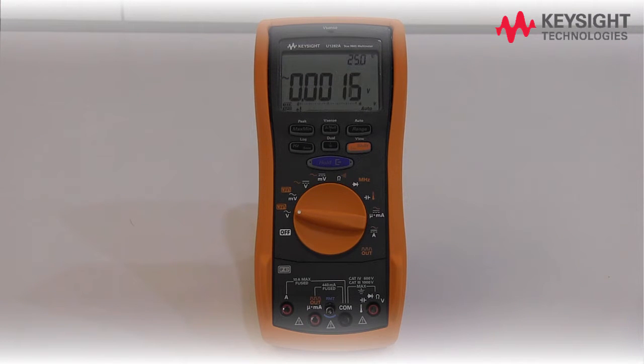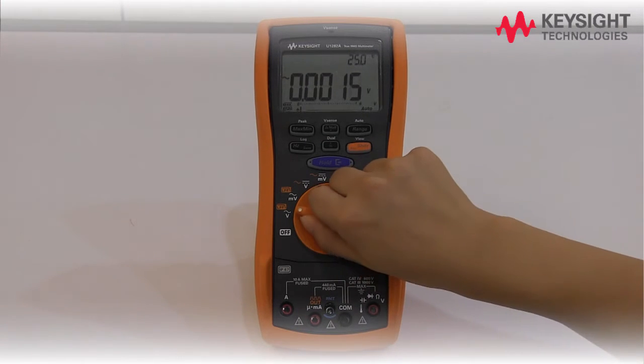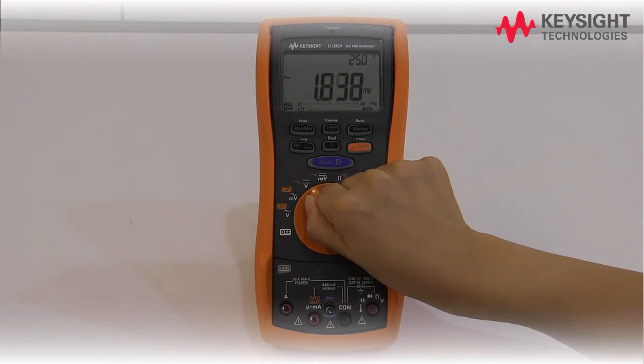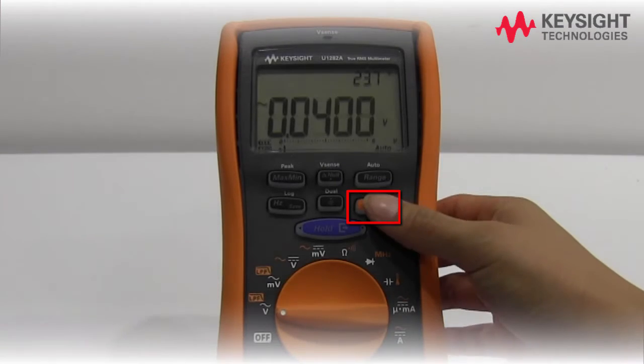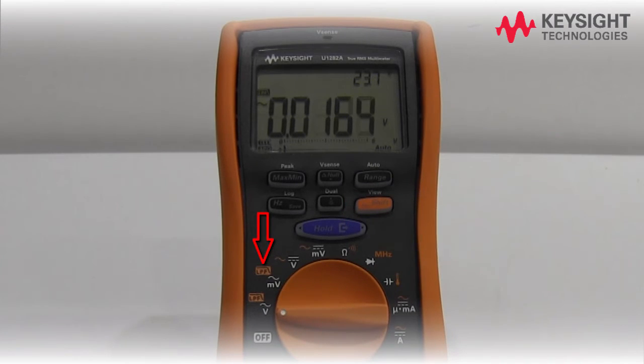To select a measurement function, switch the rotary switch accordingly. Press SHIFT to switch between the primary and shifted measurement functions indicated in orange.